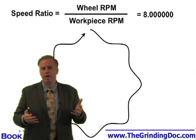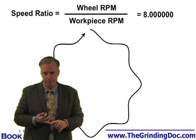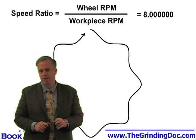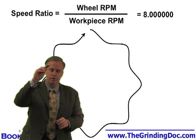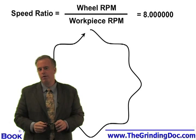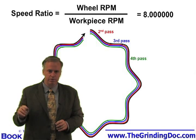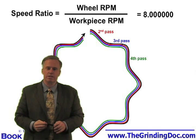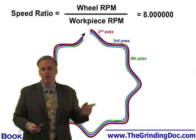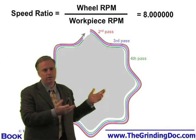Here's what the part might look like, a bit exaggerated, after the first revolution. Take your wheel RPM divided by your workpiece RPM. If you get a value that's an integer — say 8.0 — the grinding wheel goes around the workpiece one time and creates eight lobes or eight waves. If you have a true integer value like 8.0000, the second time the wheel goes around it starts in the exact same position as the first time and repeats that waviness pattern for passes two, three, and four. Your final workpiece might look something like this.